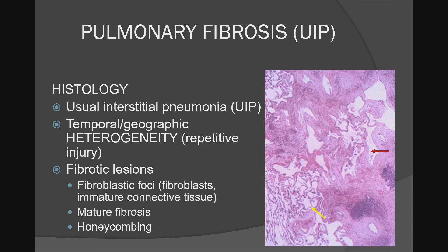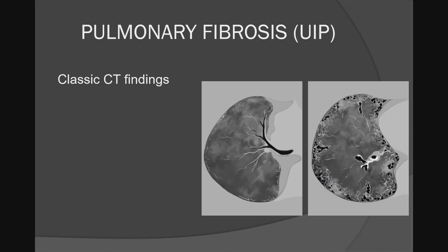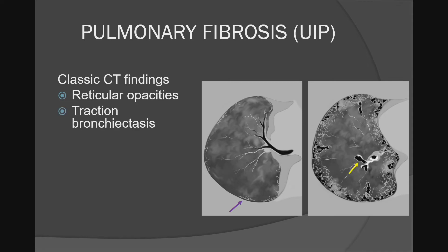They can see honeycomb cysts, but we can see them as well. The classic CT findings are going to be reticular opacities, which I'm showing with the purple arrow, traction bronchiectasis with the yellow arrow, and honeycombing with the red arrow. These drawings are courtesy of my colleague Annie Frazier.